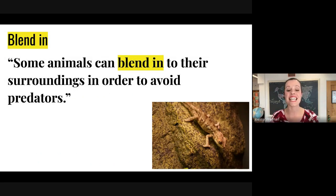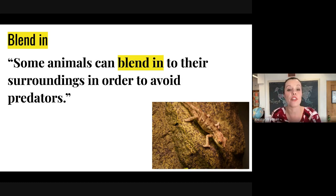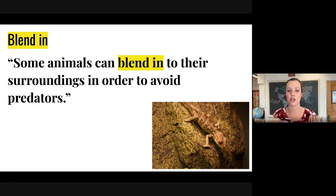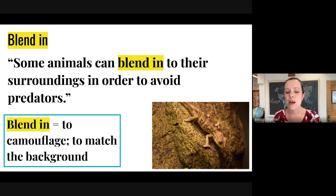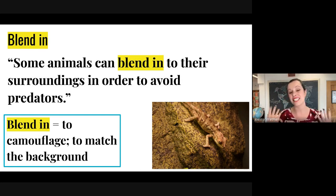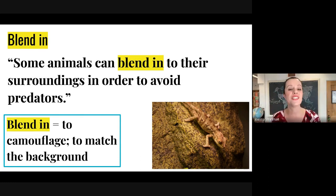Some animals can blend in to their surroundings in order to avoid predators. A predator is another animal that will usually eat them. So it's very common for some animals, like this lizard here, to blend in in order to avoid these predators or other dangerous animals. Blend in means to camouflage or match the background — this lizard is camouflaging, changing colors to match the background, making it more difficult to see.